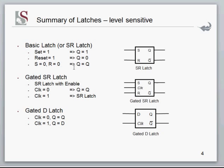The second one is called a gated SR latch. It has a line called clock, which performs the function of an enable line — it enables the input. If the clock input is low, the inputs are disabled, which means Q just remembers its value. If clock is equal to one, the inputs are enabled and this essentially turns into a basic SR latch again. It's called the gated SR latch because there's a gate that either allows the inputs in or keeps them out.